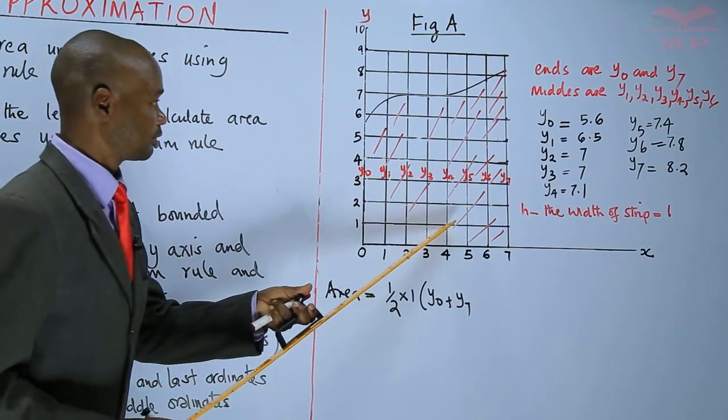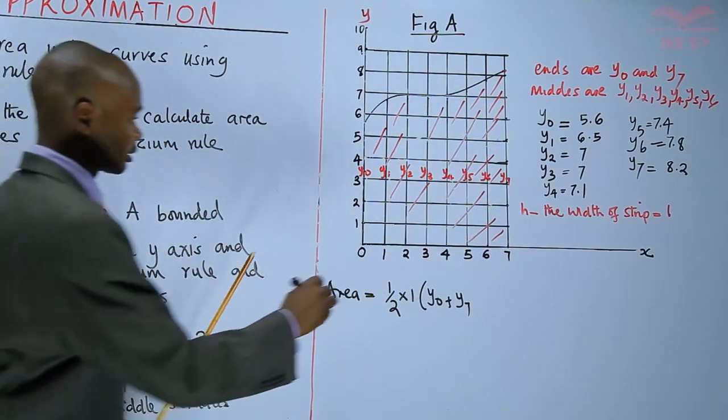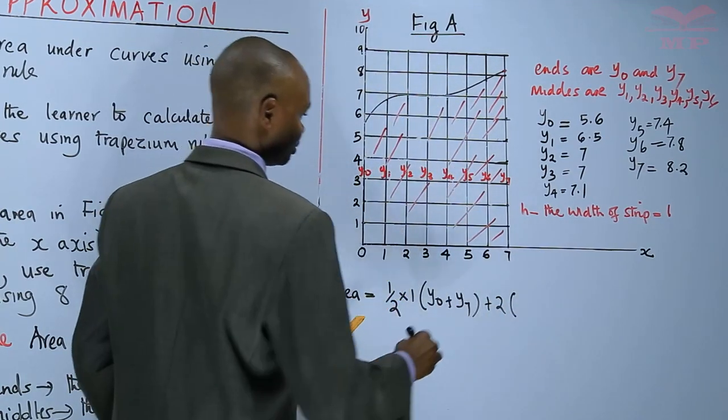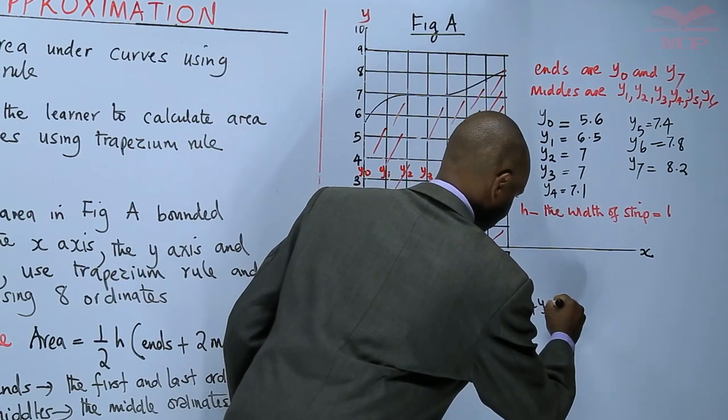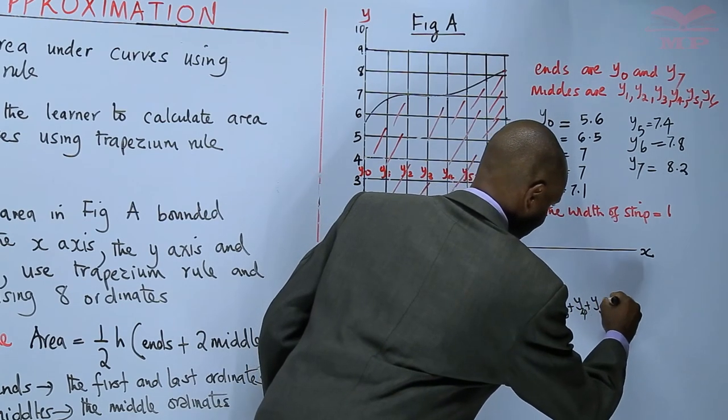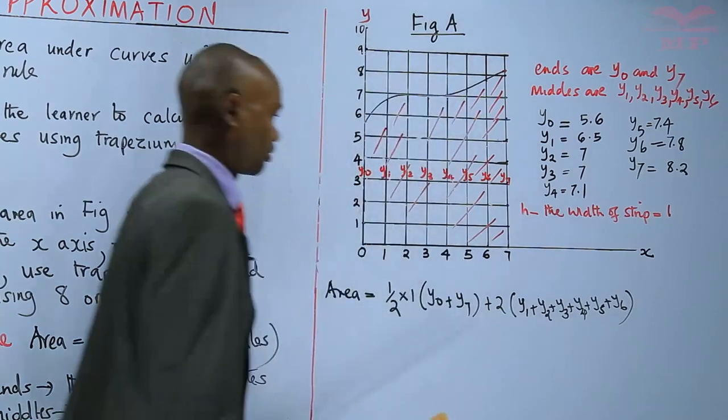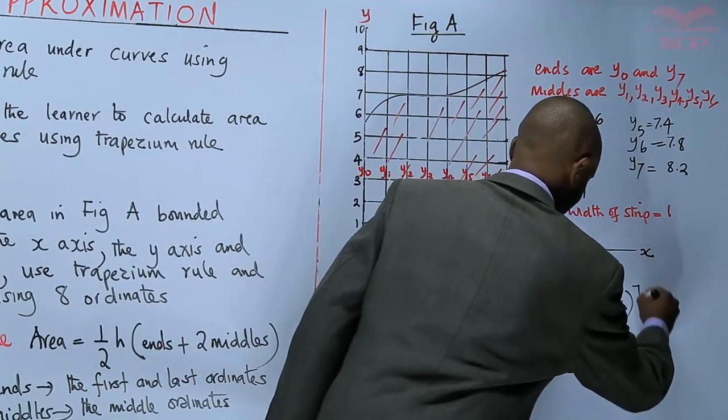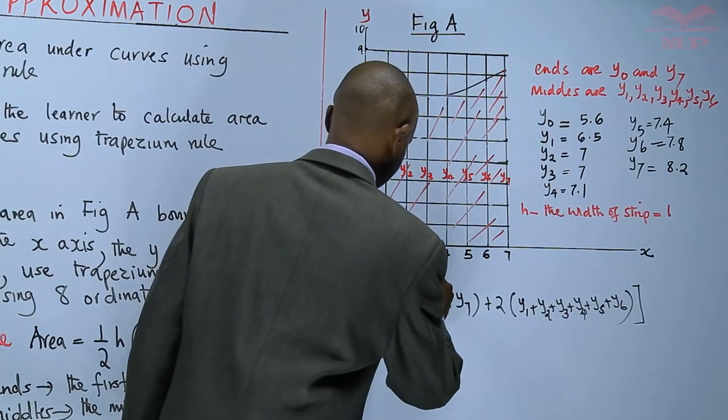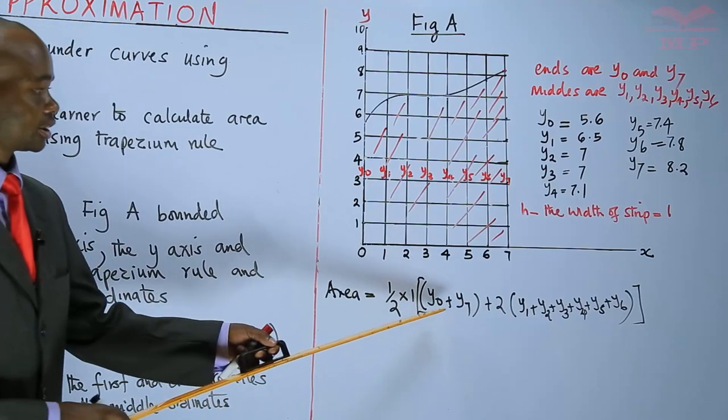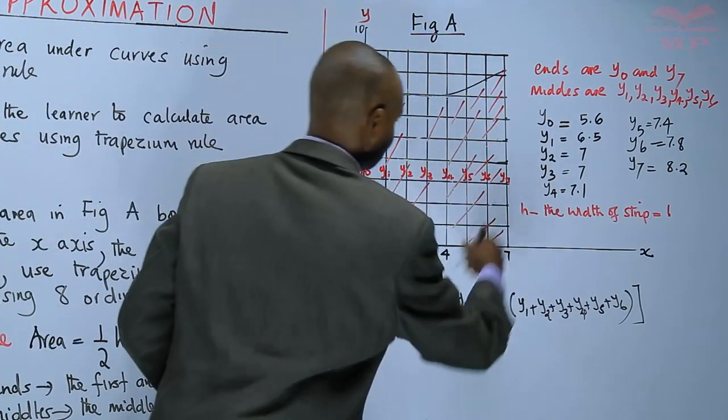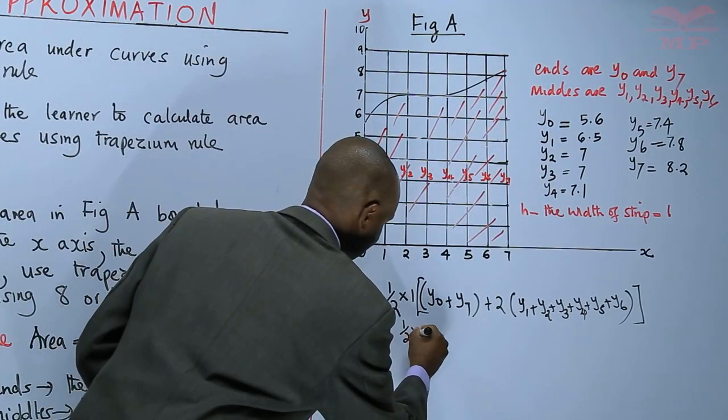We have h is 1 into y0 plus y7 close brackets plus twice into y1, y2, y3, y4, y5, and y6. If I do that, I'll actually get my area. These are the ends, y0 and y7. These are the middle ordinates. I've got the values.